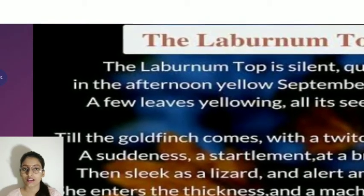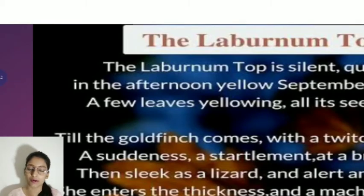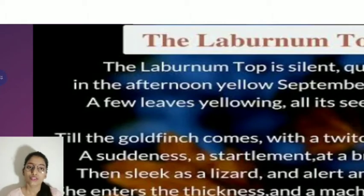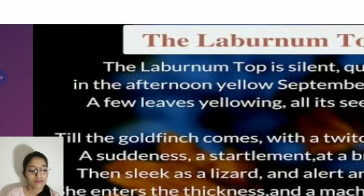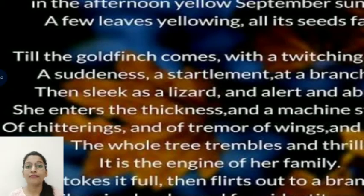The laburnum top is quite silent and quite still. The top of the laburnum tree is silent and still. It is afternoon in the month of September. Sunlight is there and some leaves are yellow because this is the season when trees shed their leaves. The seeds are gone, so the tree is already dead-like.